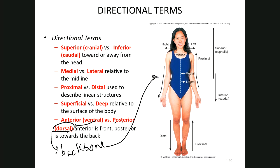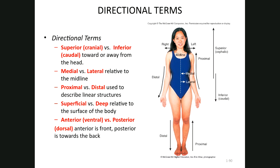On the test, expect to have anatomical structures and be asked to fill in the blanks using directional terms to describe their locations. Structures typically used include the acromion area, the antecubital area, the tip of the elbow called the olecranon, the pollux, the hallux, the calcaneus which is the heel, and the umbilicus.